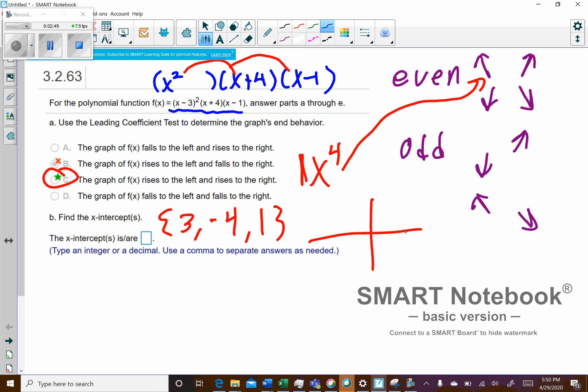So we have 1 at 3, negative 4, and then positive 1 right there. So what we're looking for is multiplicity. If you have an even multiplicity, that means it's going to touch the graph and turn around. And so we have even multiplicity for our solution of 3 right here.